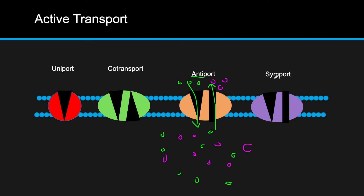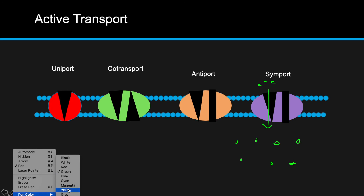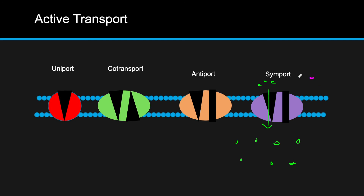Symport is when both molecules move in the same direction. Say you have a very high concentration of green molecules inside the cell and want to move more in. You have a very high concentration of magenta molecules outside and very low inside, and the natural movement of magenta through a protein channel generates the energy needed for the symport of the green molecules.